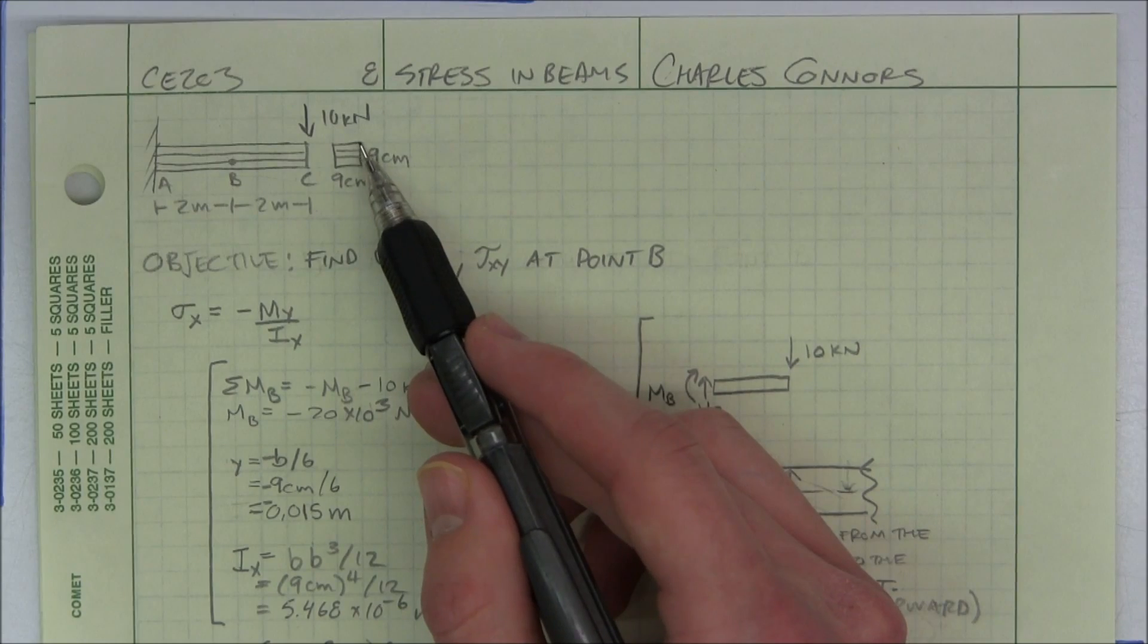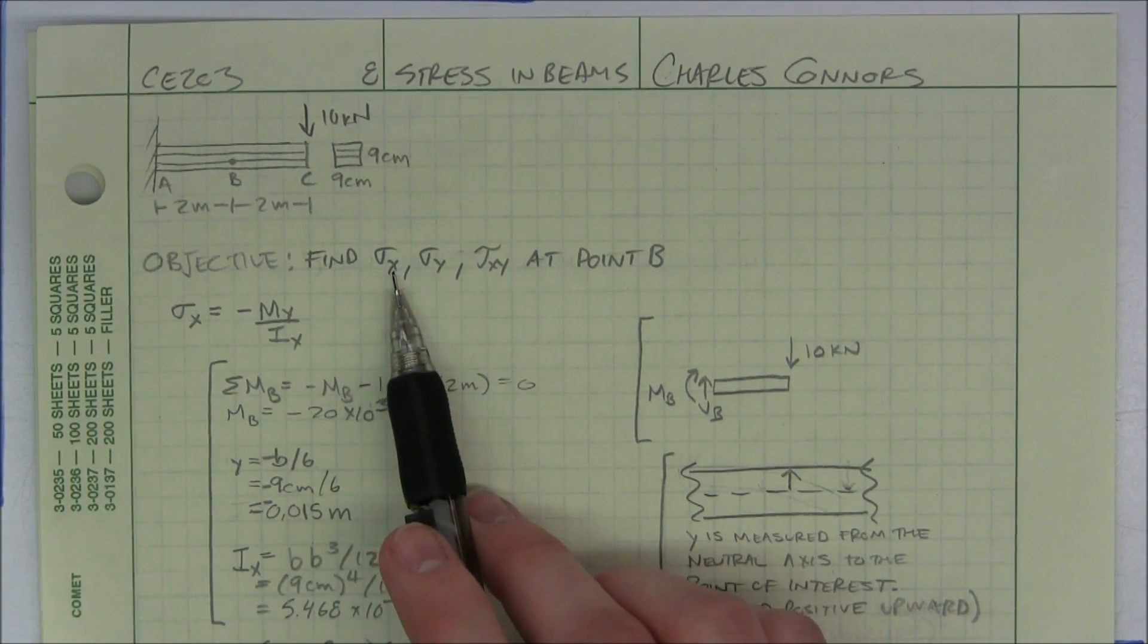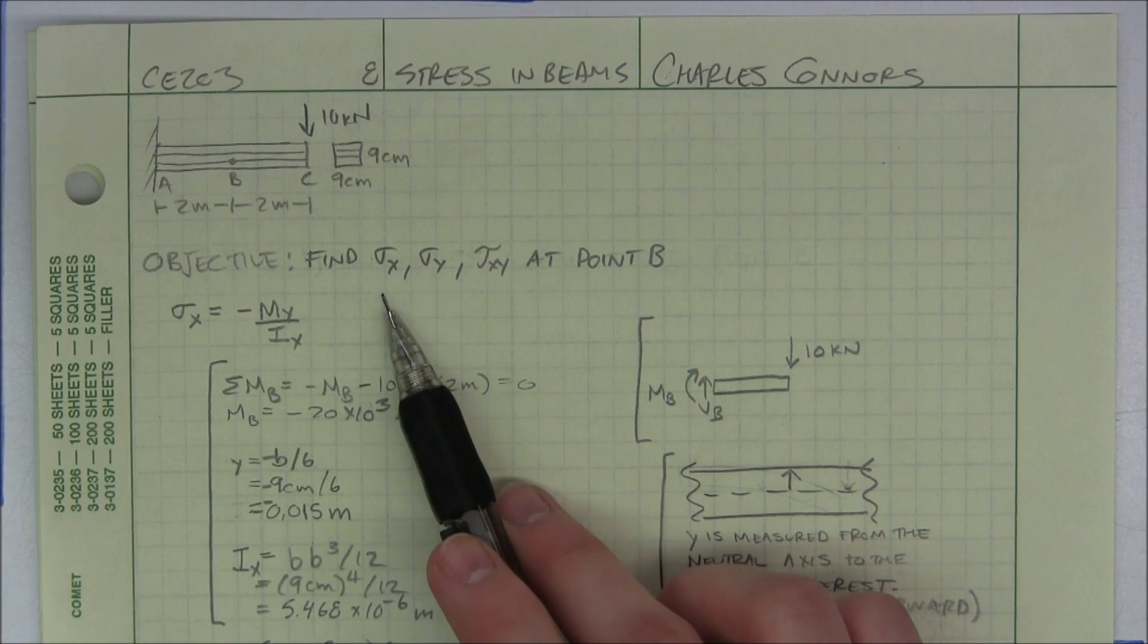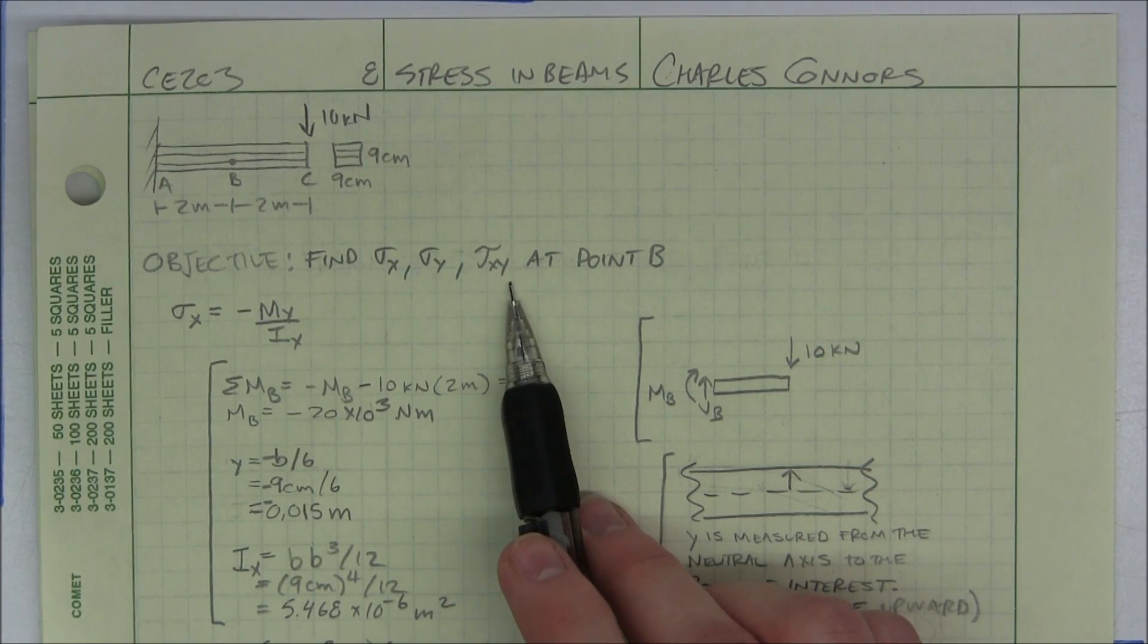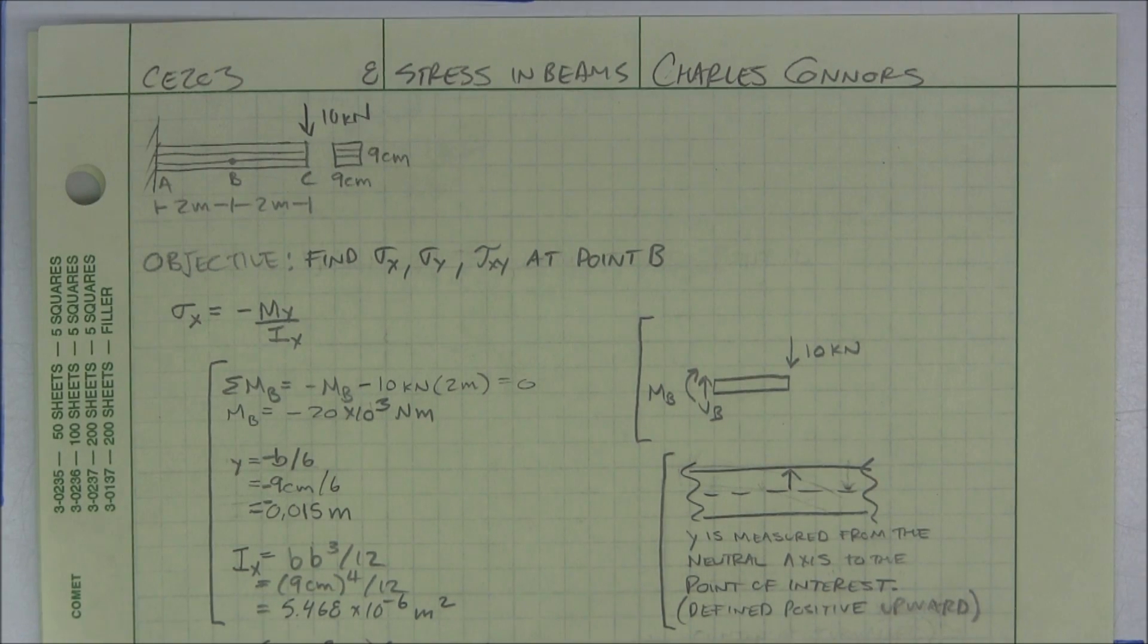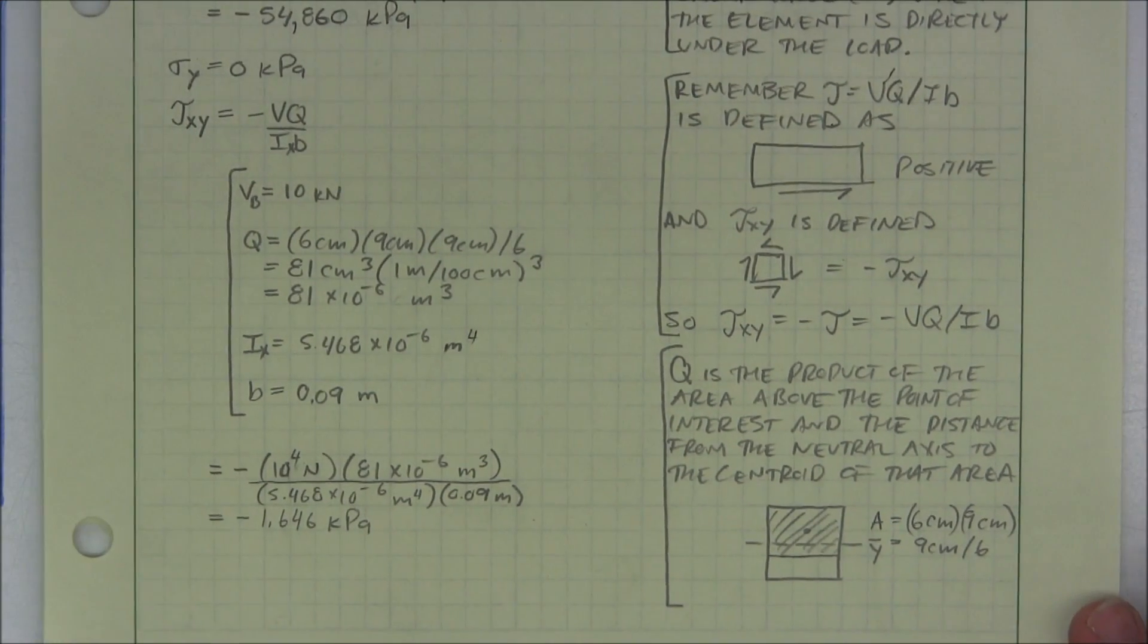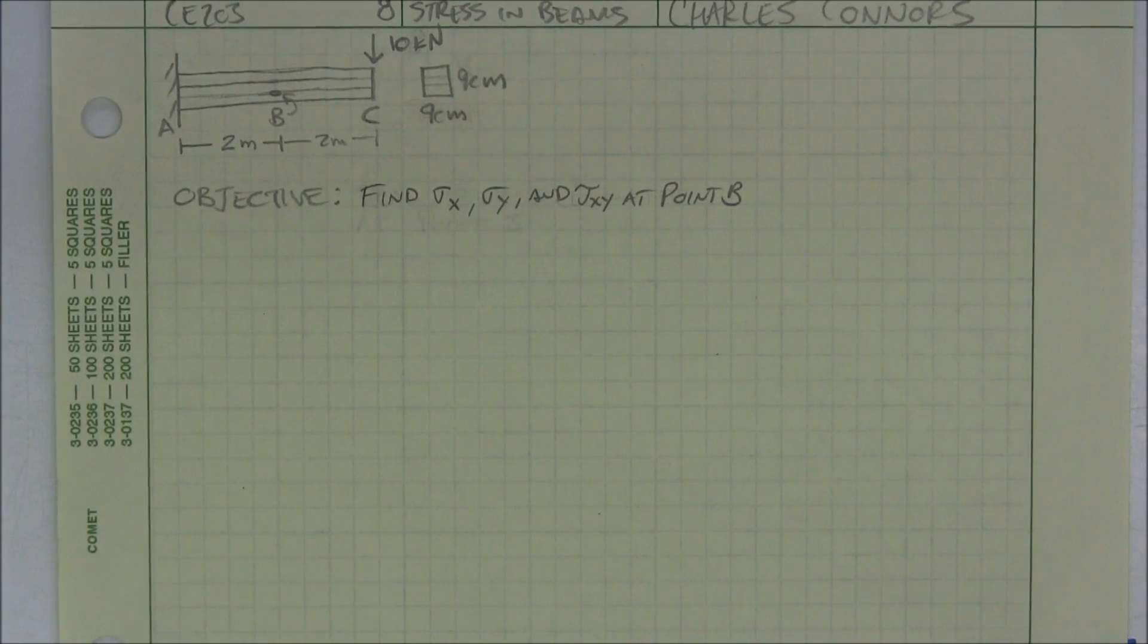We're going to assume that it's split equally into three. We want to find, in order to find the whole stress element, we need to find sigma x, sigma y, and tau xy. I'm not going to actually draw the element, but we'll calculate it. All right, let's get started.